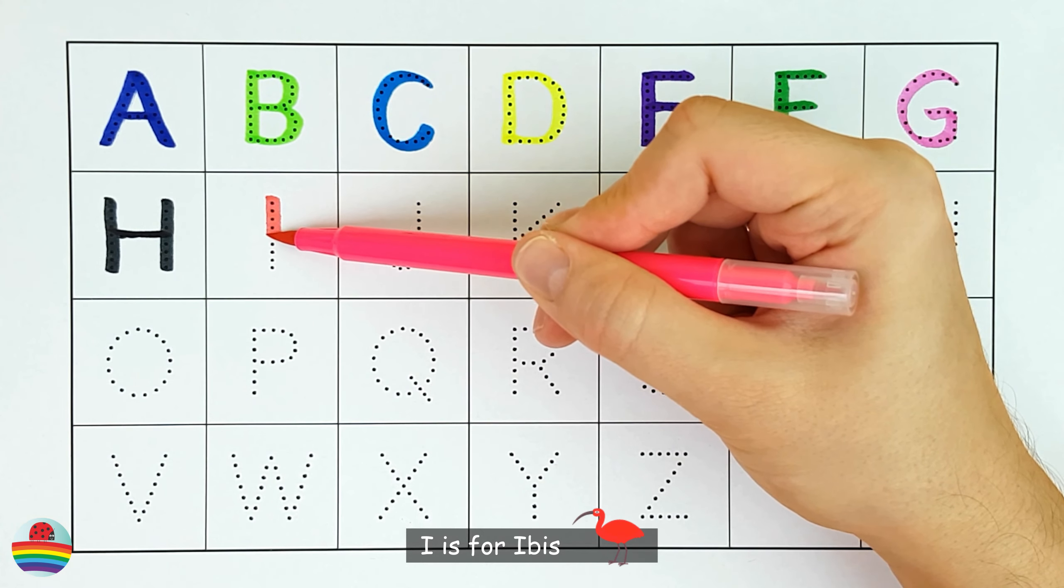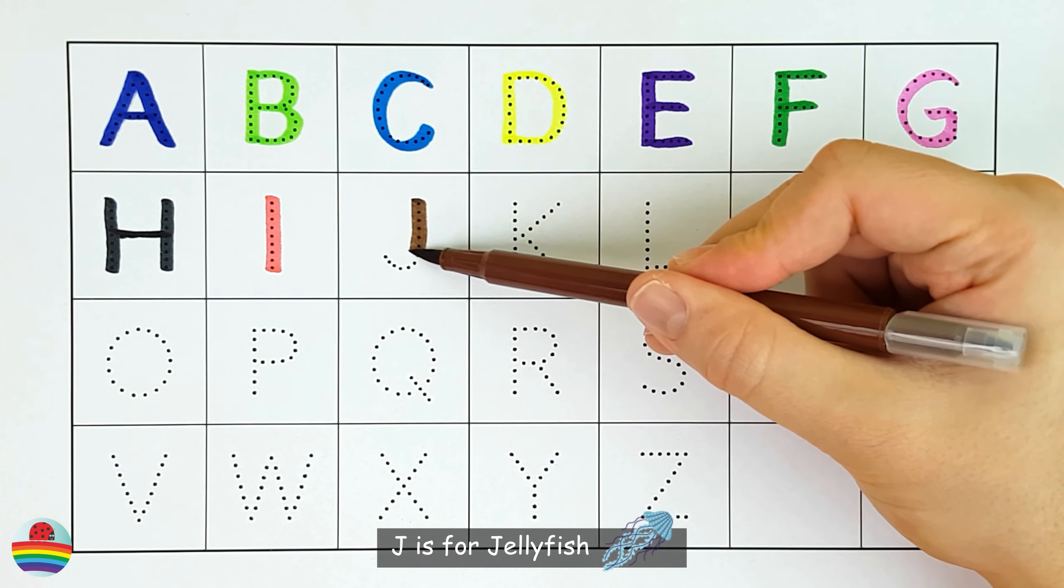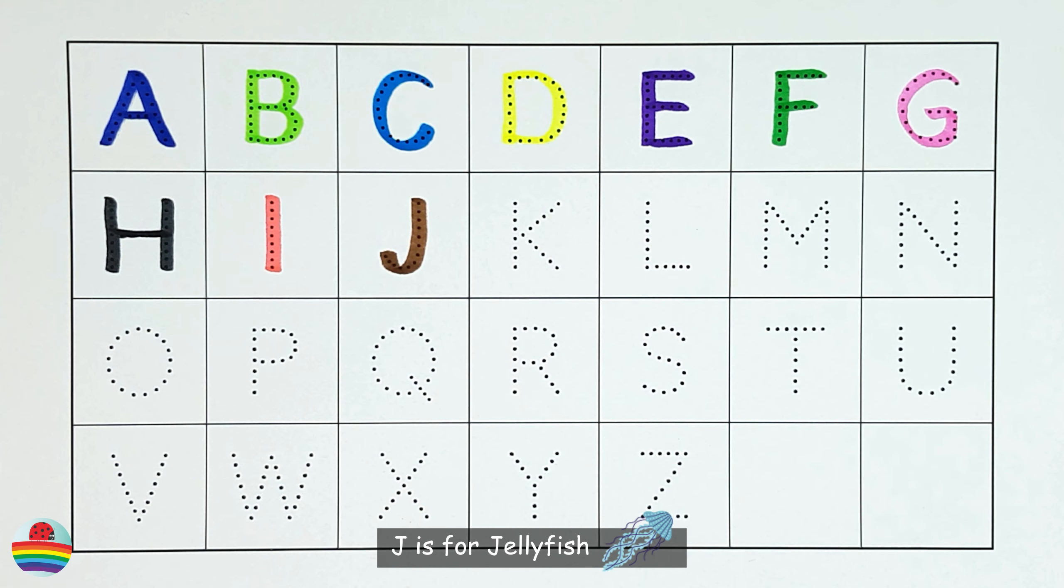I. I is for ibis. I. J. J is for jellyfish. J.